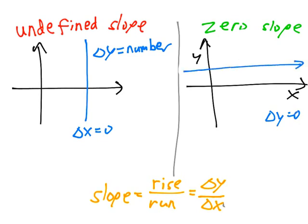Well, a flat line has that property. This line here has a run, a delta x, that's a number.